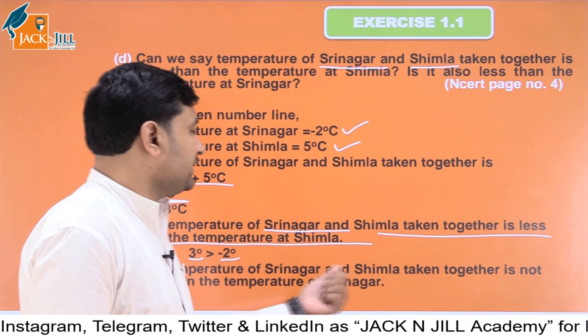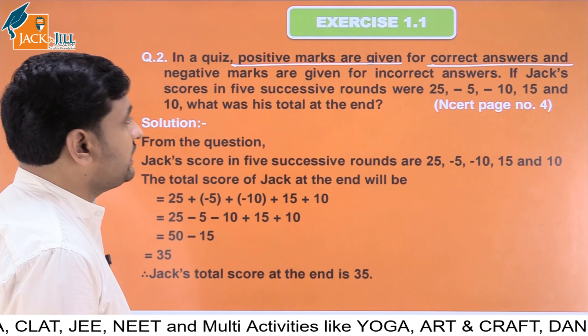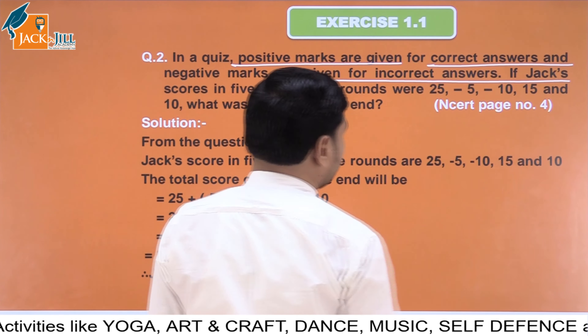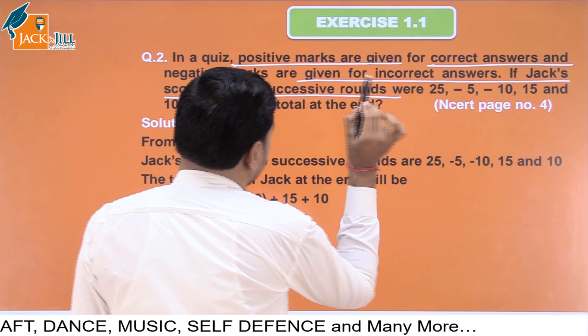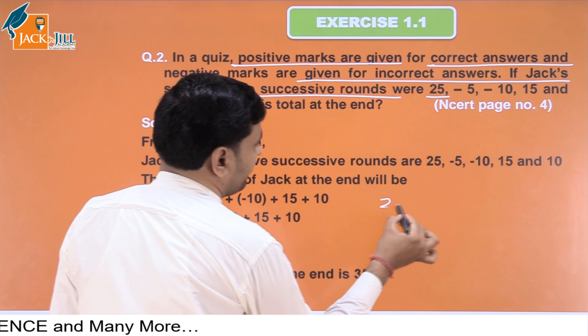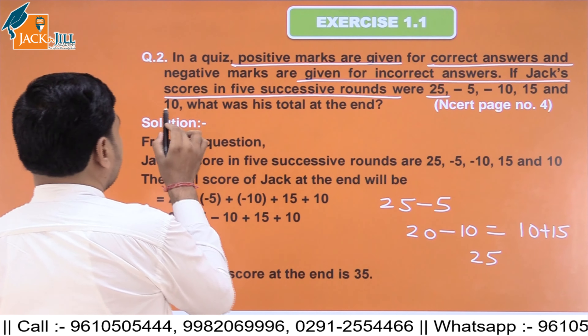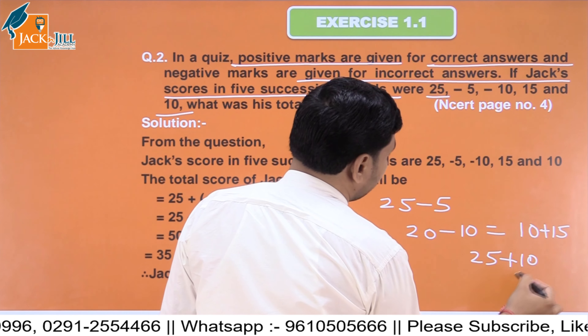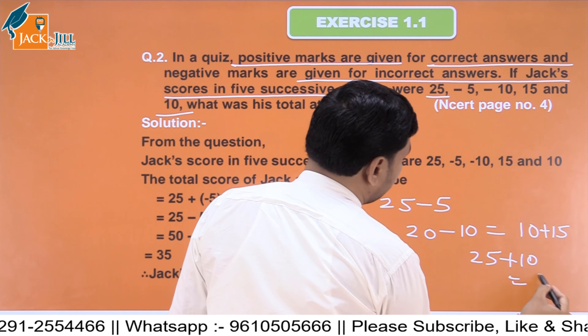Question 2: In a quiz, positive marks are given for a correct answer and negative marks for an incorrect answer. A player scored in 5 successive rounds: plus 25 in round 1, minus 5 in round 2 giving 20, then minus 10 making it 10, then plus 15 giving 25, and finally plus 10, making the last final score 35.